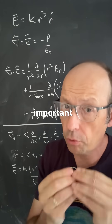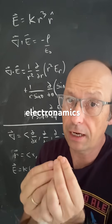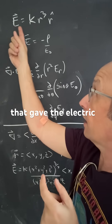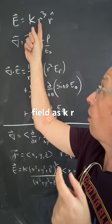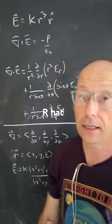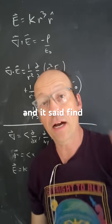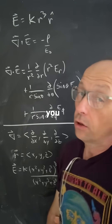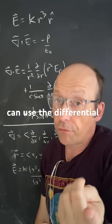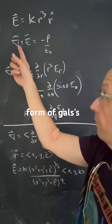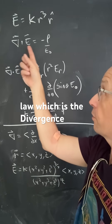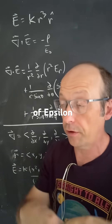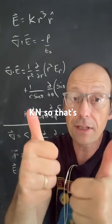I want to show you something important in electrodynamics. This is a problem that gives the electric field as kr³ r̂ and asks you to find the charge density. You can use the differential form of Gauss's law, which is the divergence of E equals the charge density over epsilon naught.